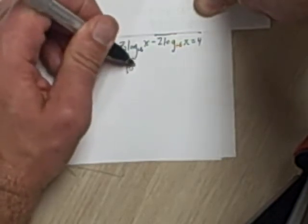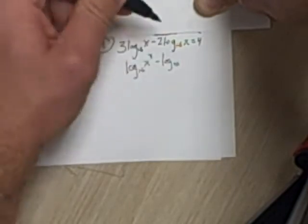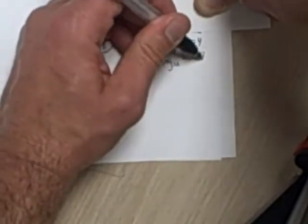I'm going to rewrite this as a log base 16 of x cubed minus a log base 16 of x squared, and that is still equal to 4.